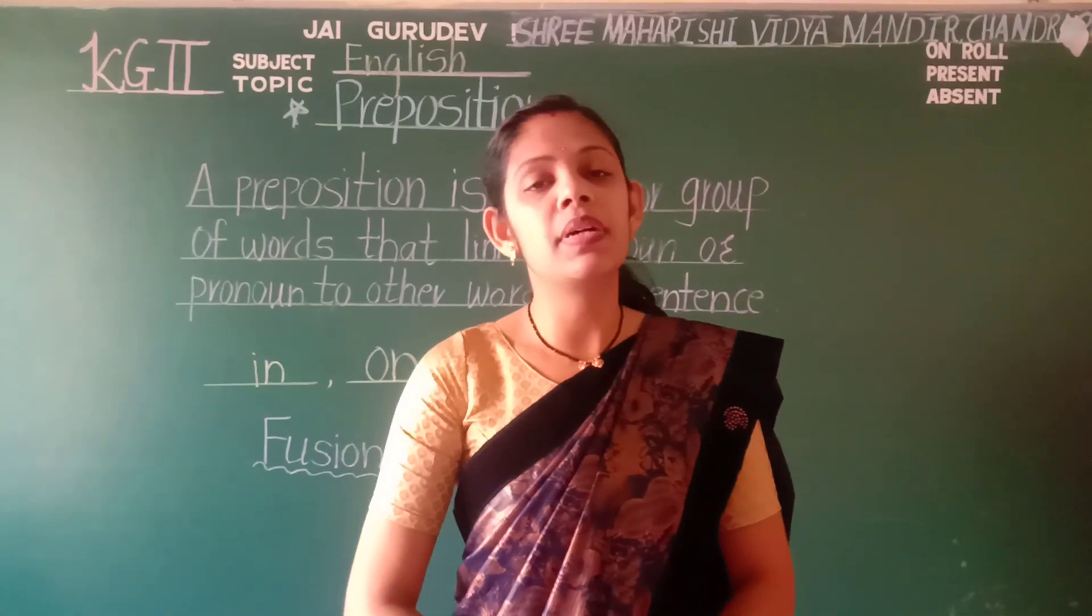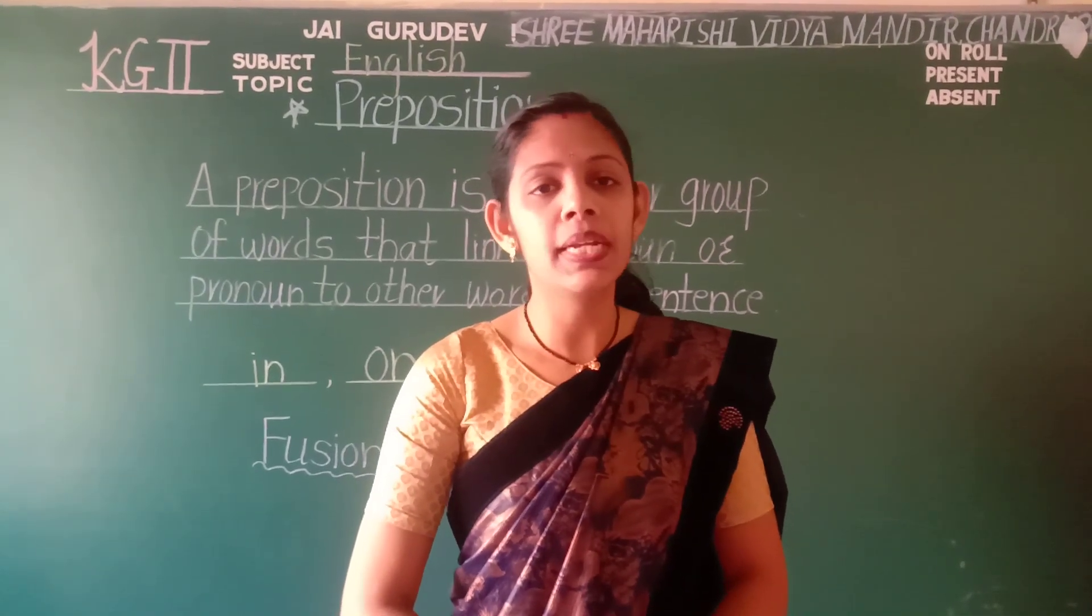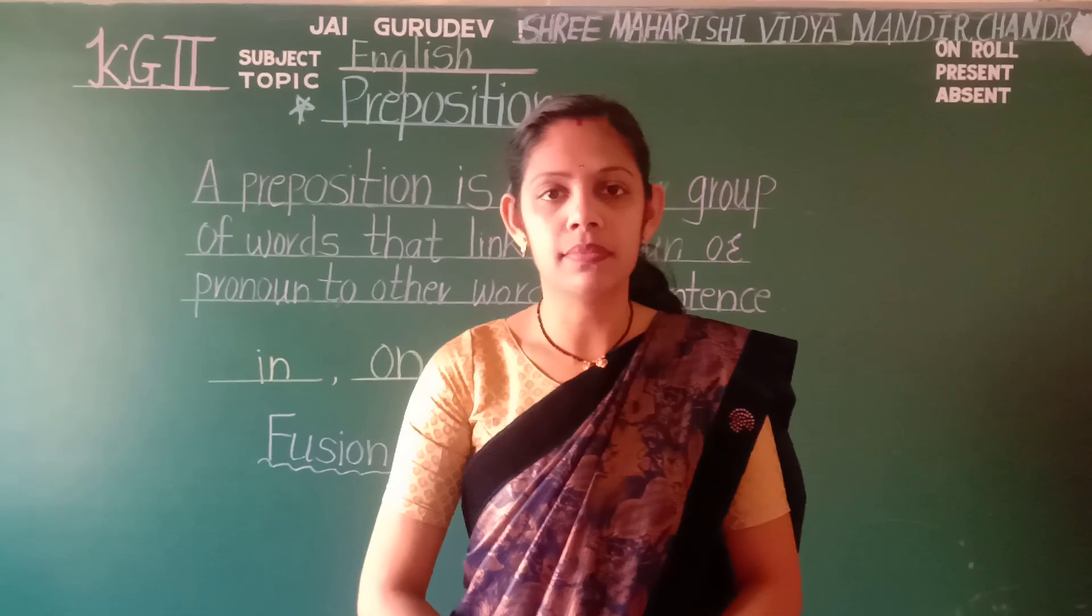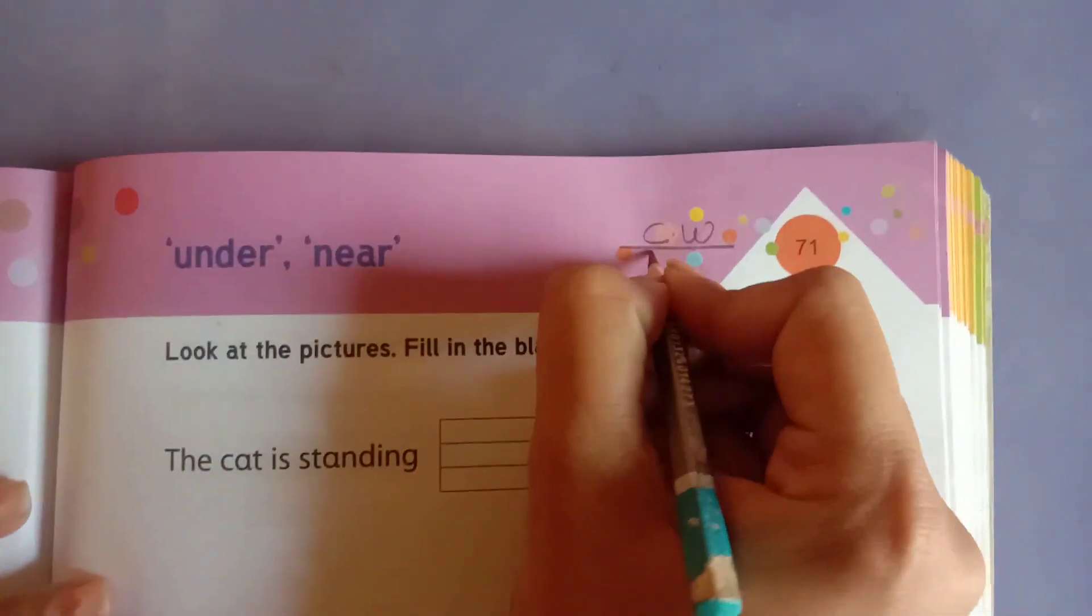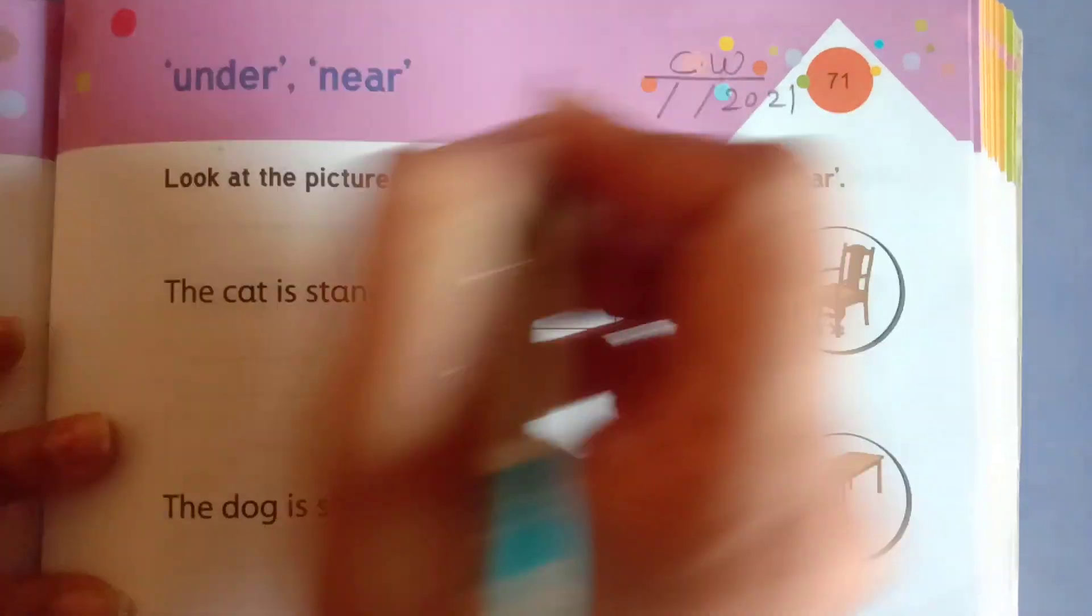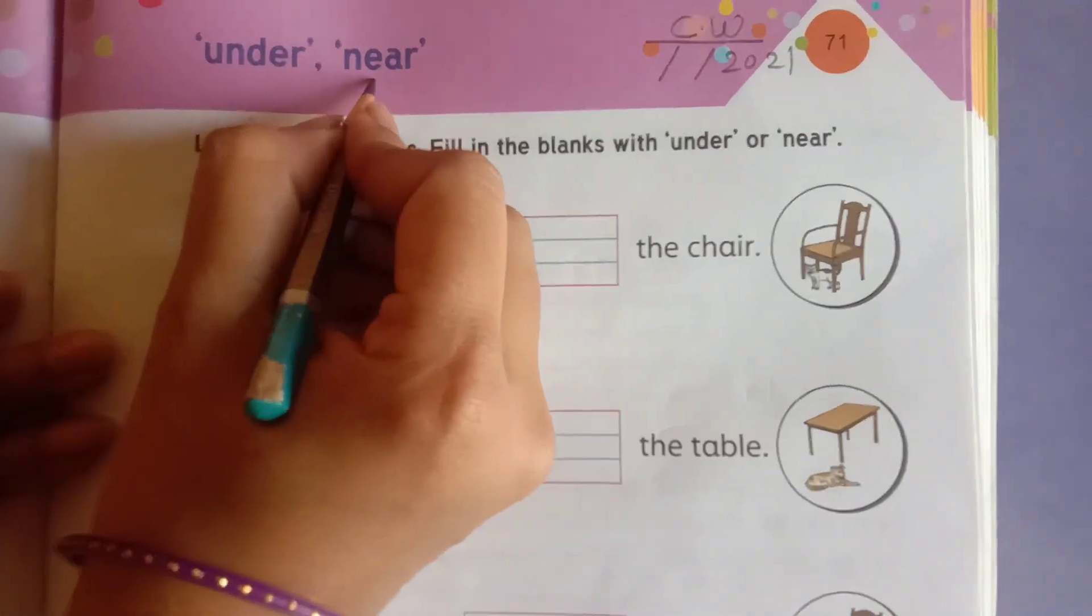Fusion to page number 71. Open it and be ready with your pencil. Whenever you will get my video, write down C.W. Mention the date, month and the year. Under, near.